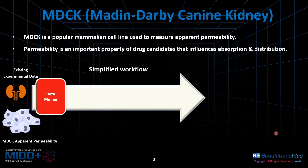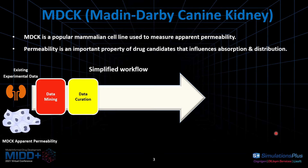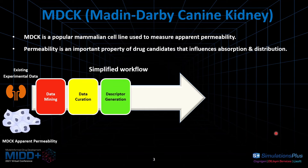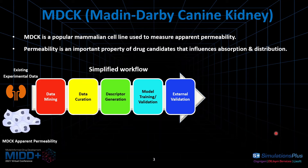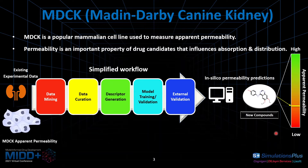To give an overview of the pipeline: the first step is data mining, where I was collecting experimental data from databases and literature. The second step is data curation, which is actually the most heavy-lifting part of the entire pipeline — this is where we make sure that the cell line information is correct, we verify ambiguous data, and deal with a lot of messiness in the dataset. The next step is descriptor generation. Once we have the curated dataset and descriptors, we start building models and validating them, then do external validation. At the end of the pipeline, we have a final model to make in silico predictions for new compounds.